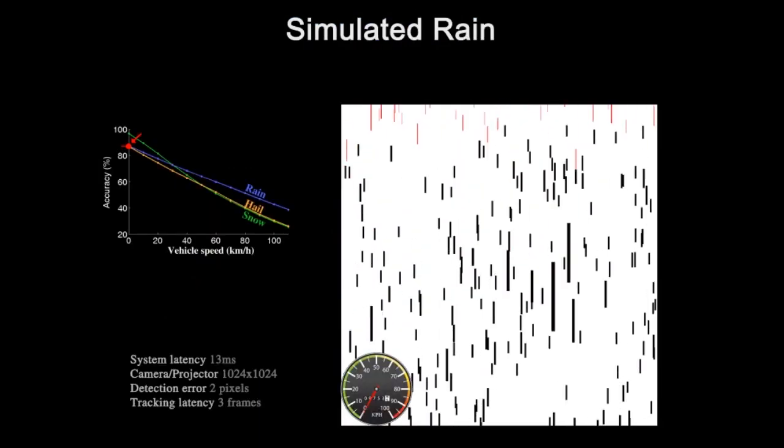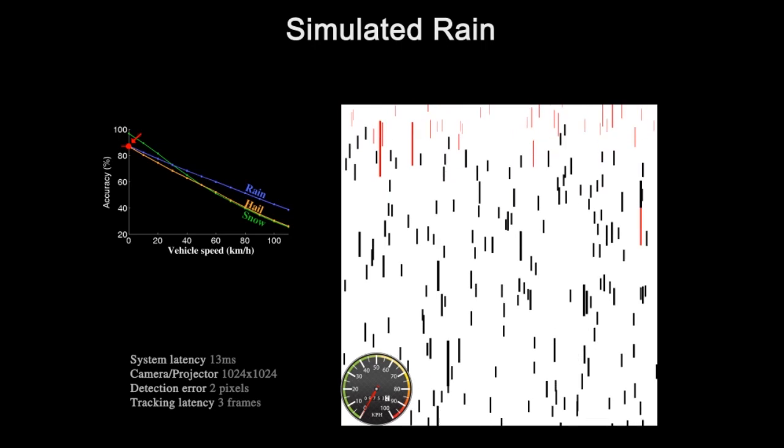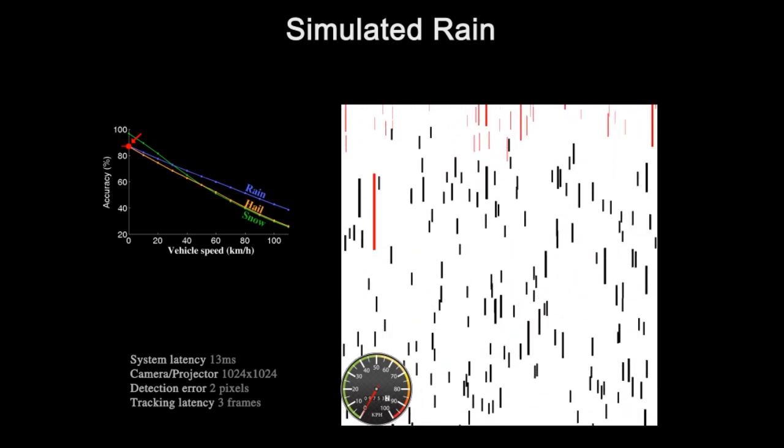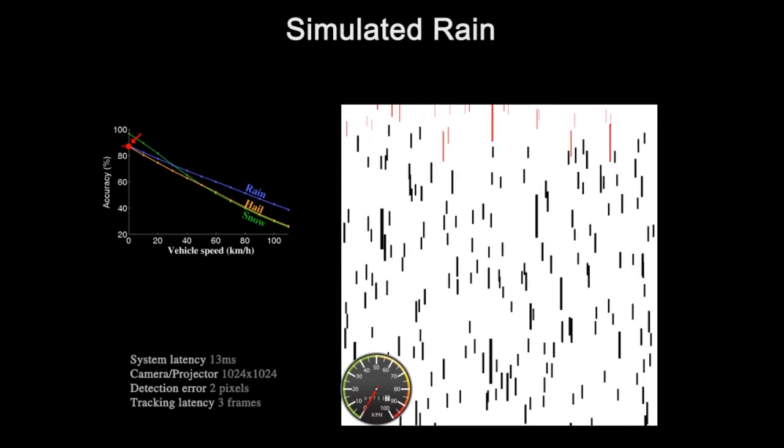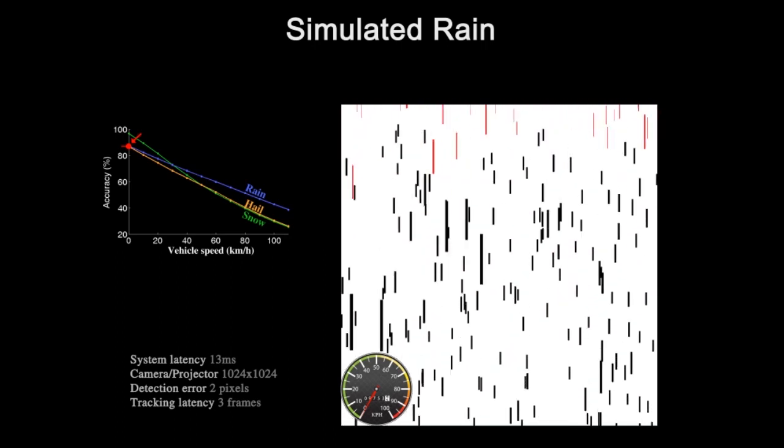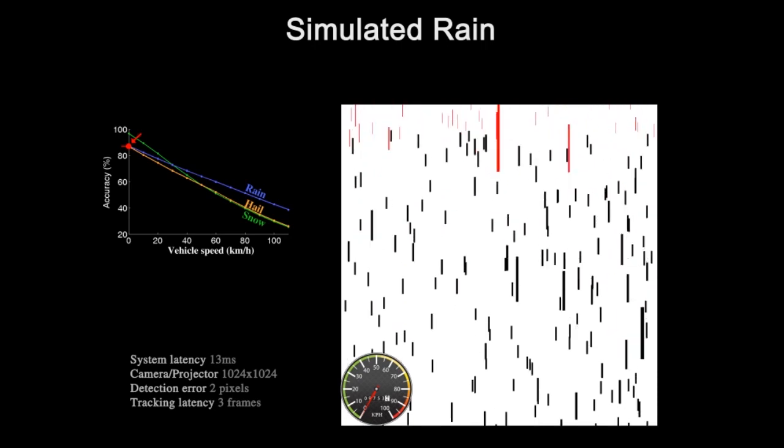Using simulation, we have investigated the requirements for such a system to be feasible. Here is a simulation of rain, 5 mm per hour, with a system latency of 13 milliseconds. Our adaptive projection system runs at 120 Hz.